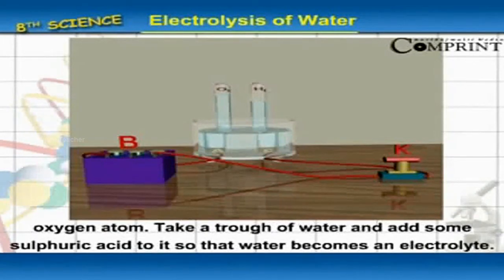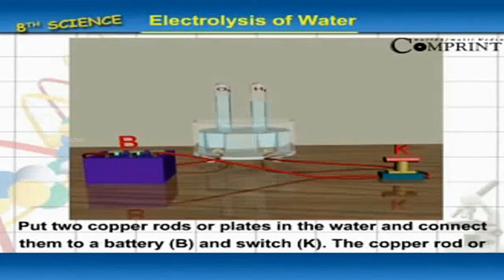Take a trough of water and add some sulphuric acid to it so that water becomes an electrolyte. Put the two copper rods or plates in water and connect them to a battery B and switch K as shown in figure 12.16.